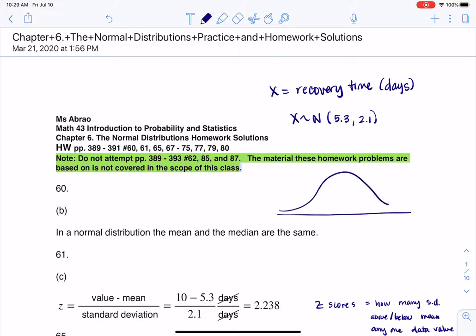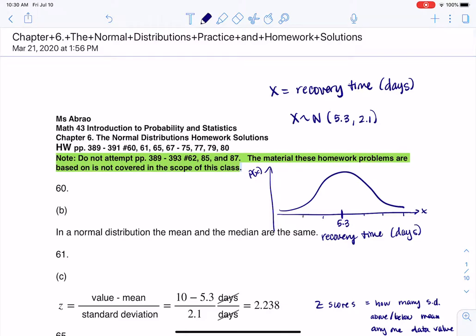So if I really wanted to quickly make my PDF, I'd have x along my x-axis, I'd have probability along my y-axis, I'd have recovery time here with units in days, and I would have 5.3 right under the peak here. And I could scale this up by adding 2.1 and subtracting 2.1. I usually do like 3 up, 3 back for z-scores, but I'm not going to.